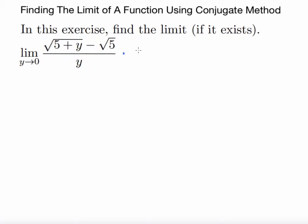The conjugate method says that you multiply your original expression by its conjugate, or at least the conjugate that has the radical part of it. So √(5+y) + √5. Now the plus here will be the conjugate form of this negative, so it's √(5+y) + √5 over √(5+y) + √5.